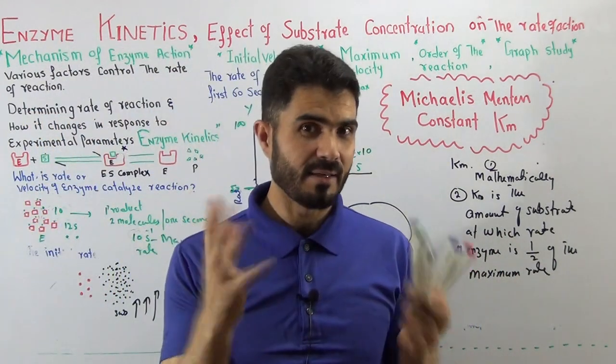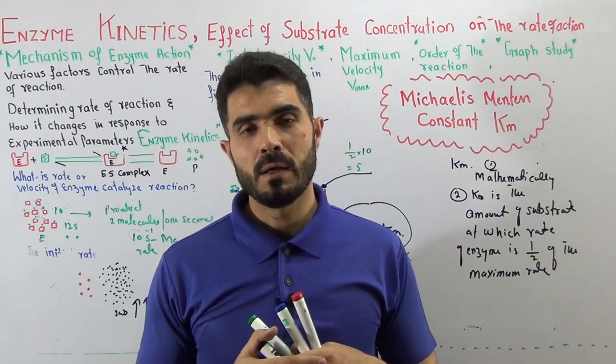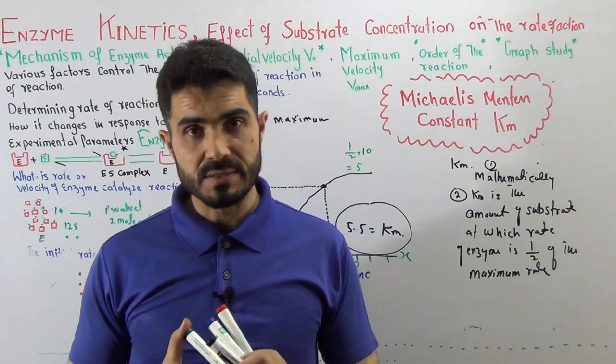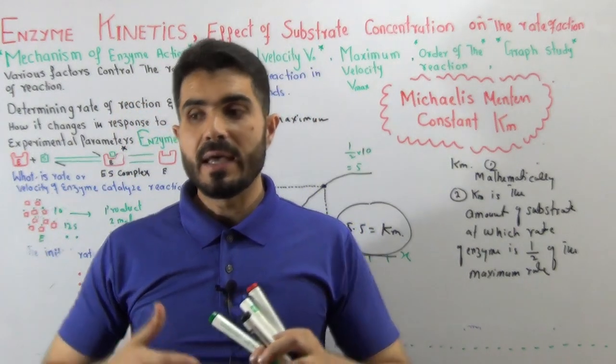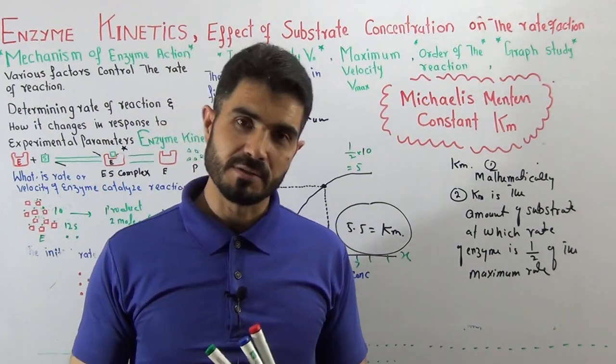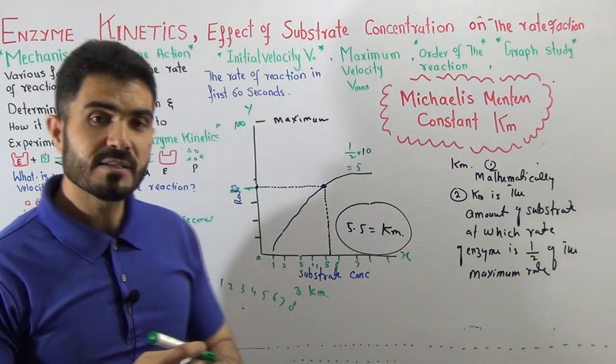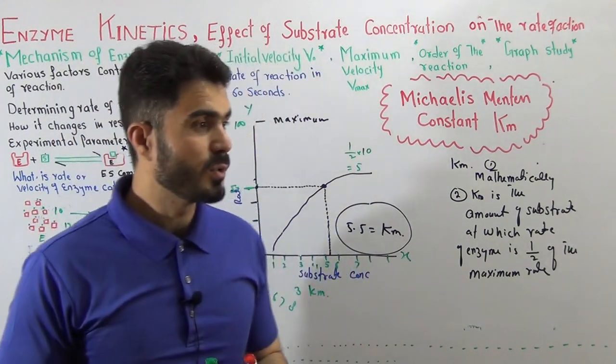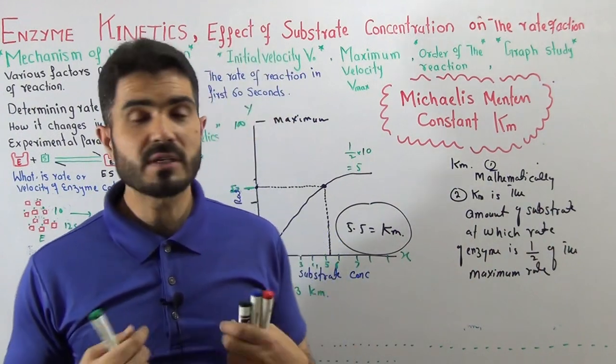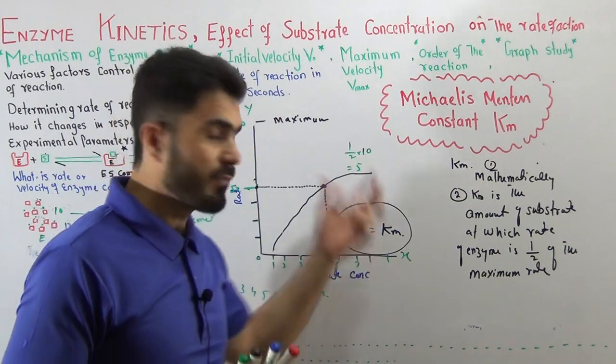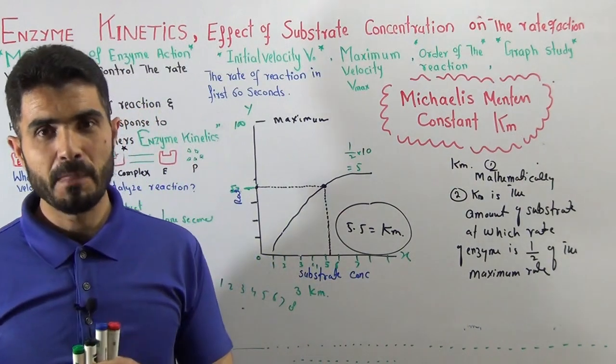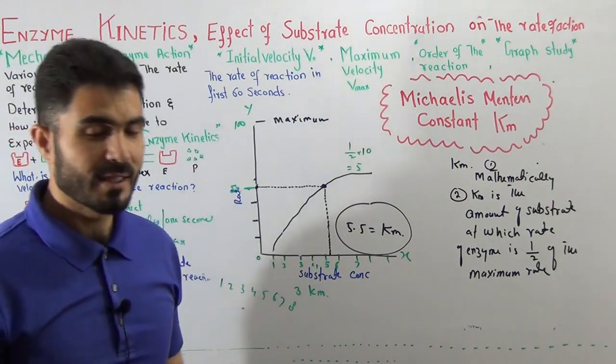Second thing that Km gives us: with the help of Km, we can trace any enzyme's maximum speed, maximum efficacy, maximum speed. Means you have an enzyme and you want to check what is the maximum speed of the enzyme - Km will tell you. So this is another very good idea of Km. Third thing.